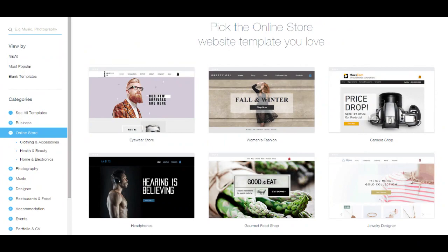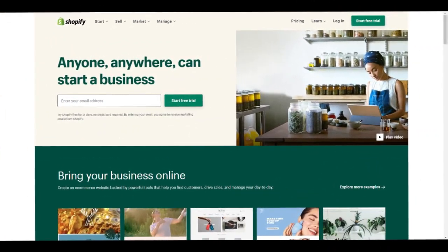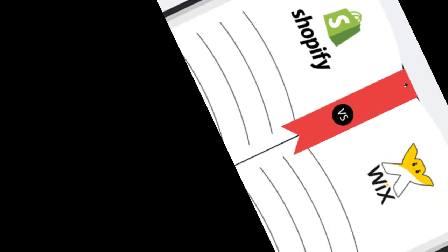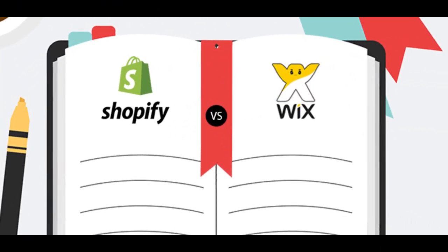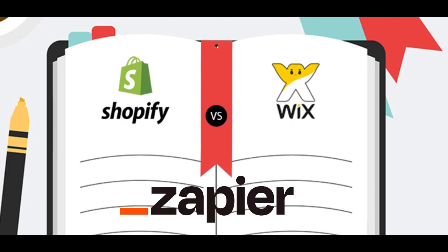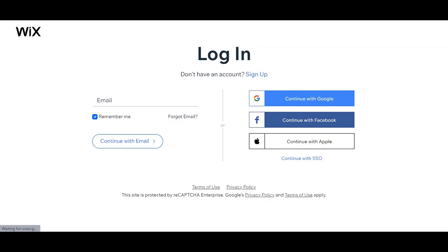Imagine you have Wix for your website and Shopify for selling things — they don't talk to each other on their own. But there's a tool called Zapier that helps them understand each other. Now let's start by logging onto your Wix account.